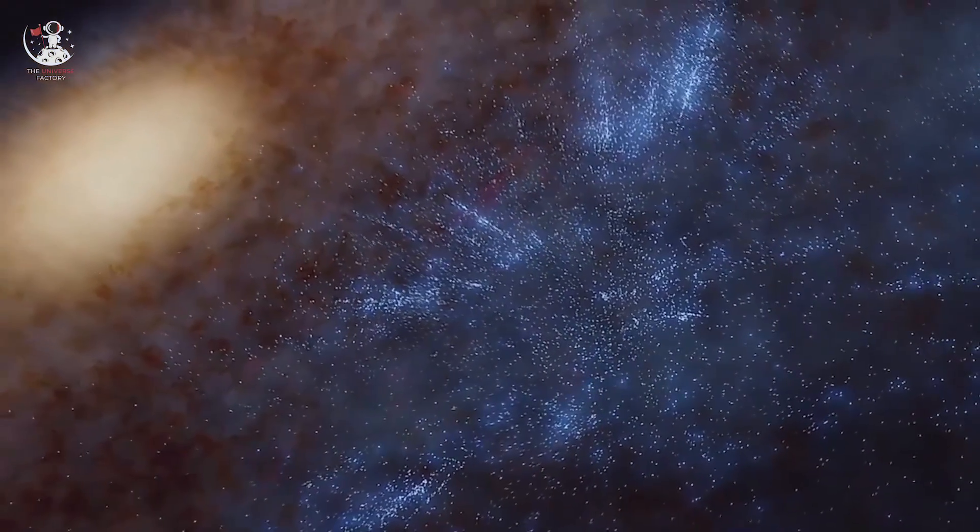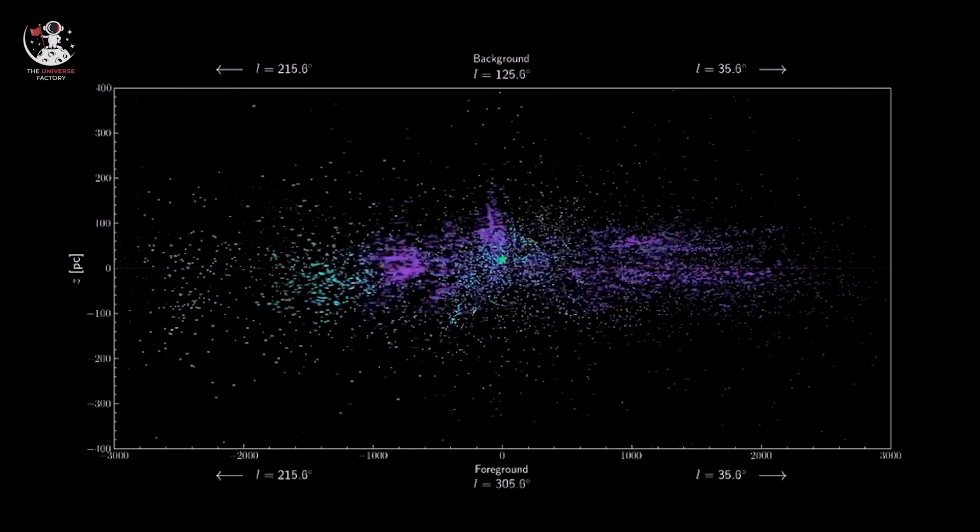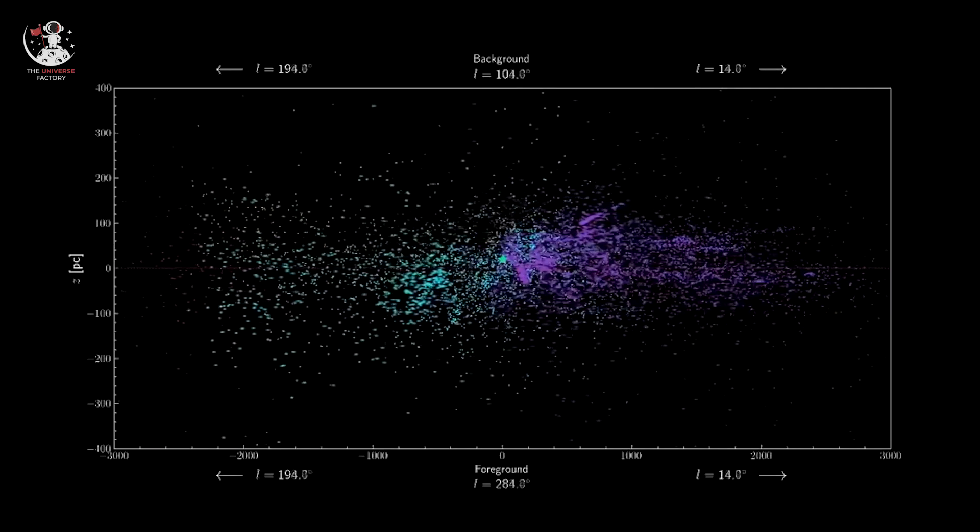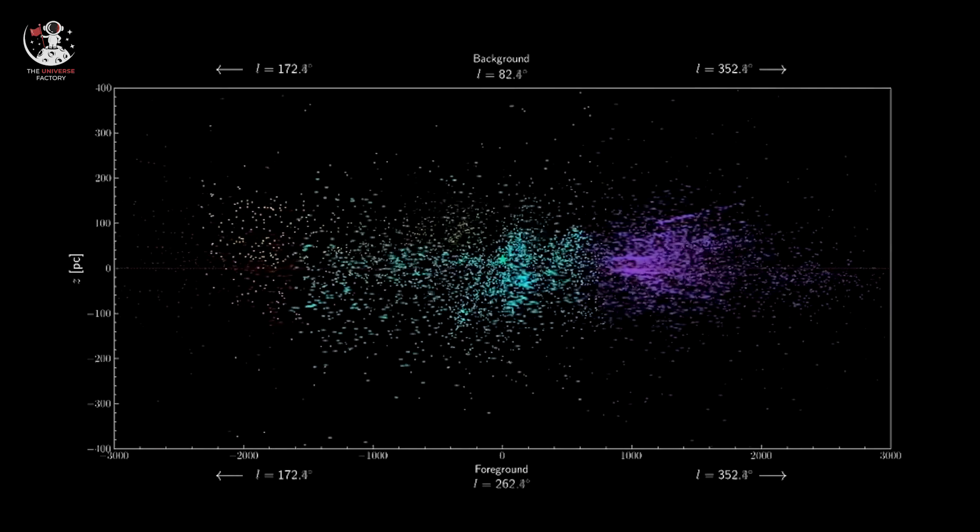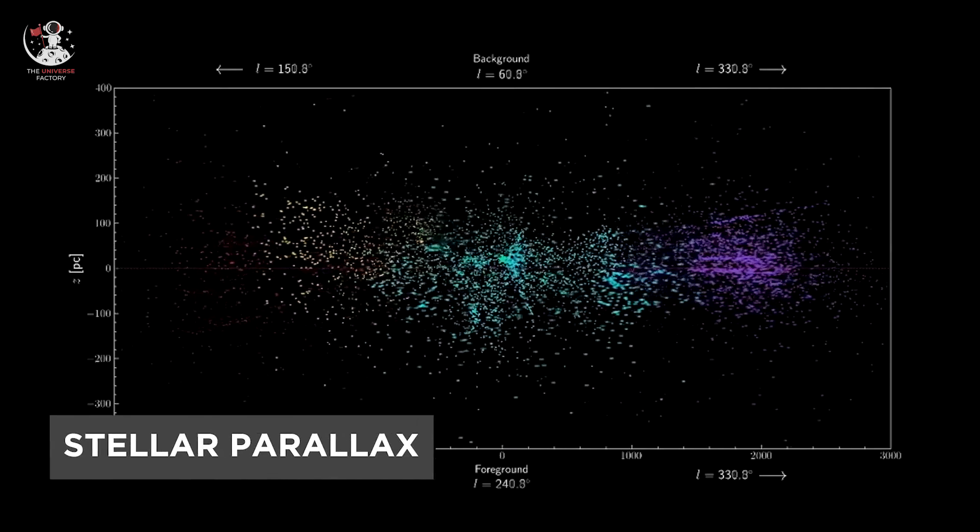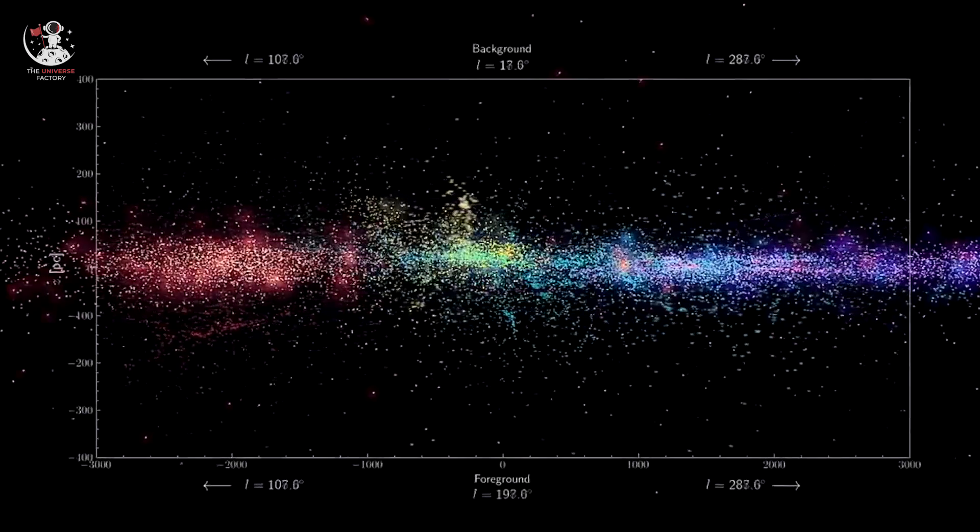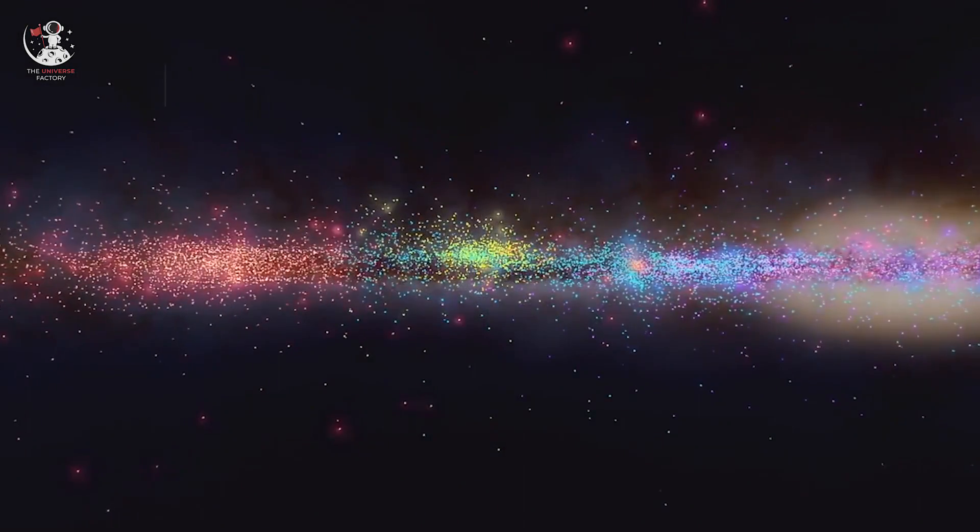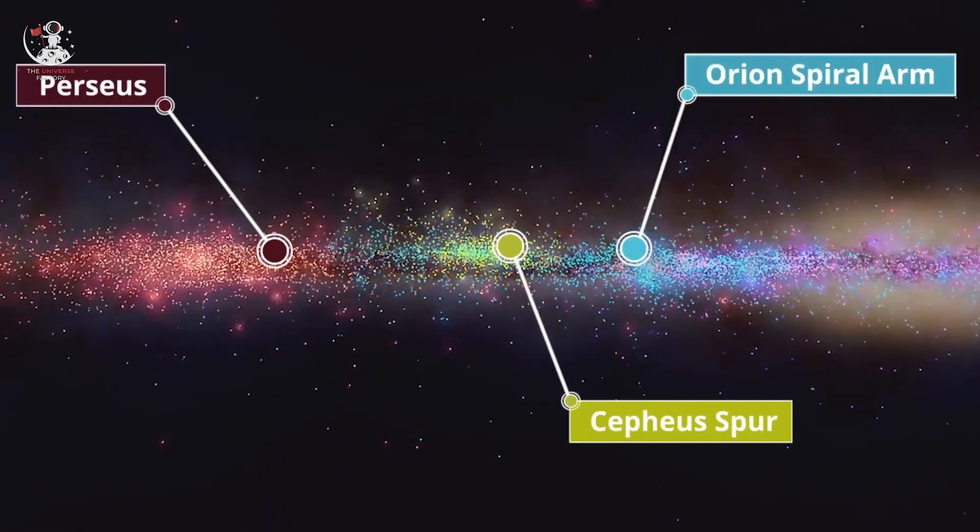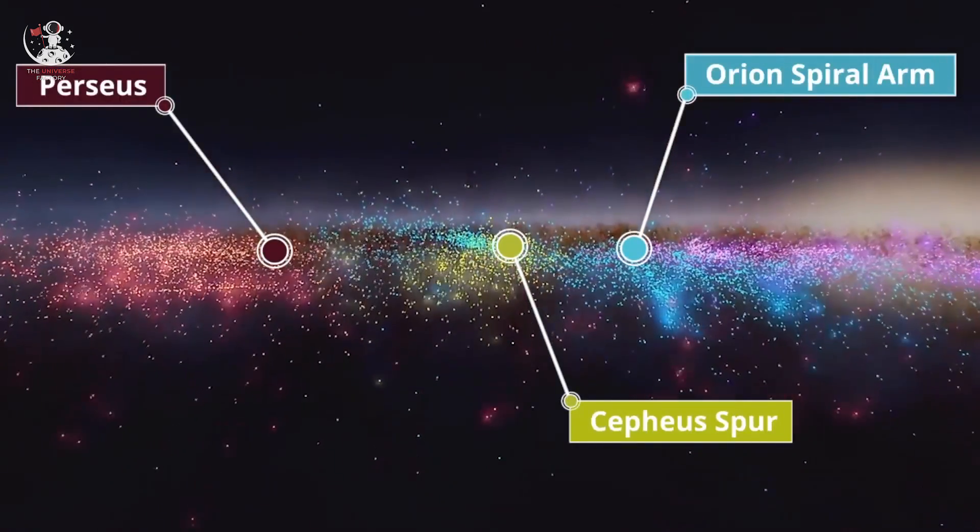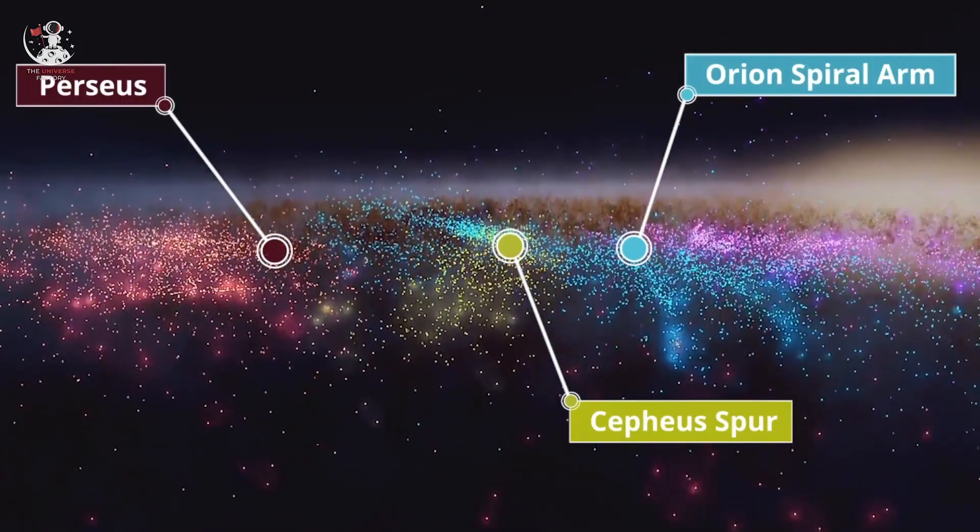The researchers compiled their star map by triangulating the stars' distances to Earth using a technique called Stellar Parallax. By comparing the apparent position of the stars observed from different perspectives during Earth's orbit around the sun, astronomers can calculate the distances of the stars themselves.